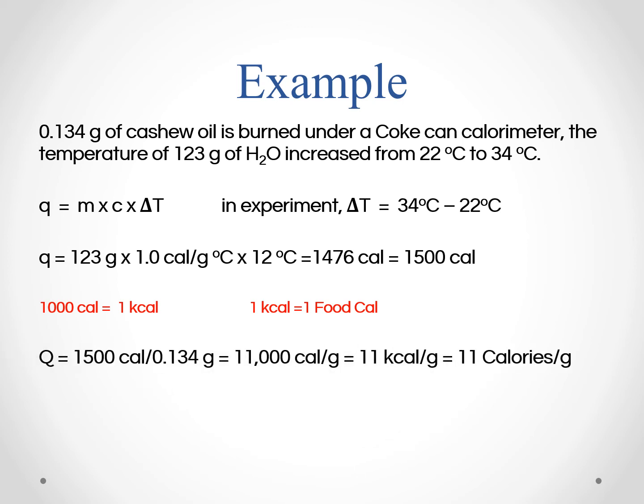So to do this, we can divide our 1500 calories that we just calculated from the heat change equation, divide by our mass of our food item, and now we have 11,000 calories per gram.